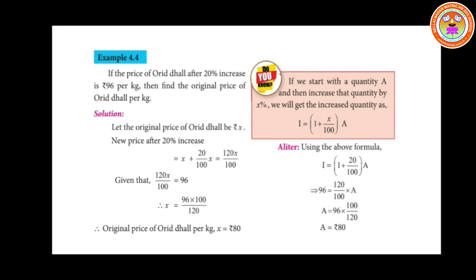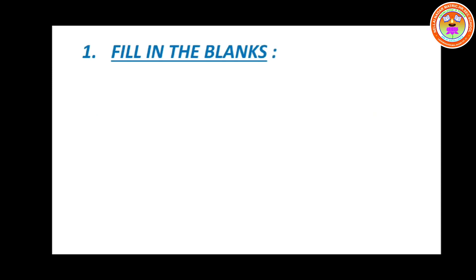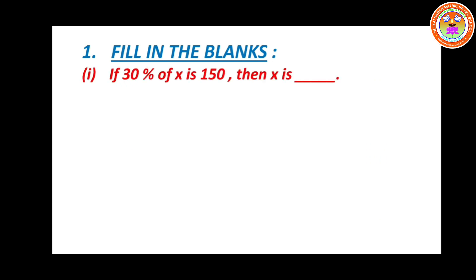You can also use another formula: I equals 1 plus x divided by 100 into A. Now let us move on to Exercise 4.1, first section — fill in the blanks. Subdivision 1: If 30% of x is 150, then x is blank.